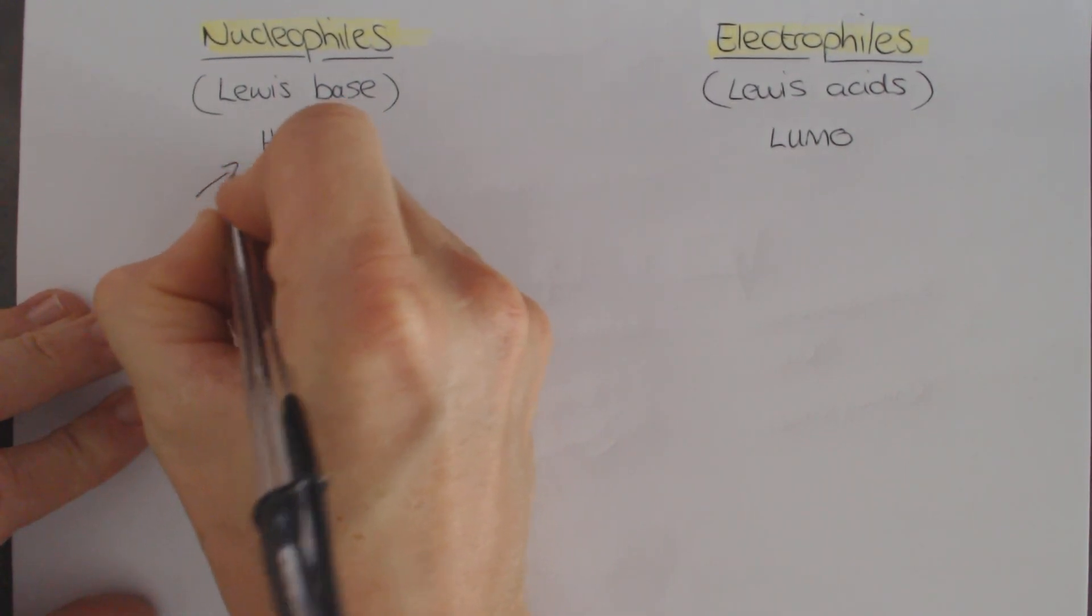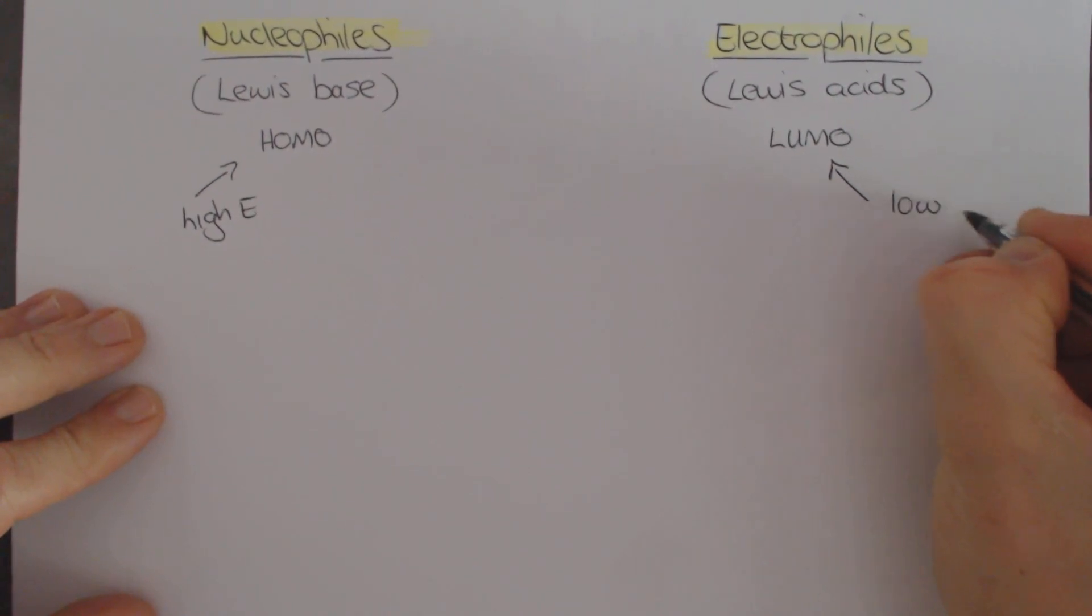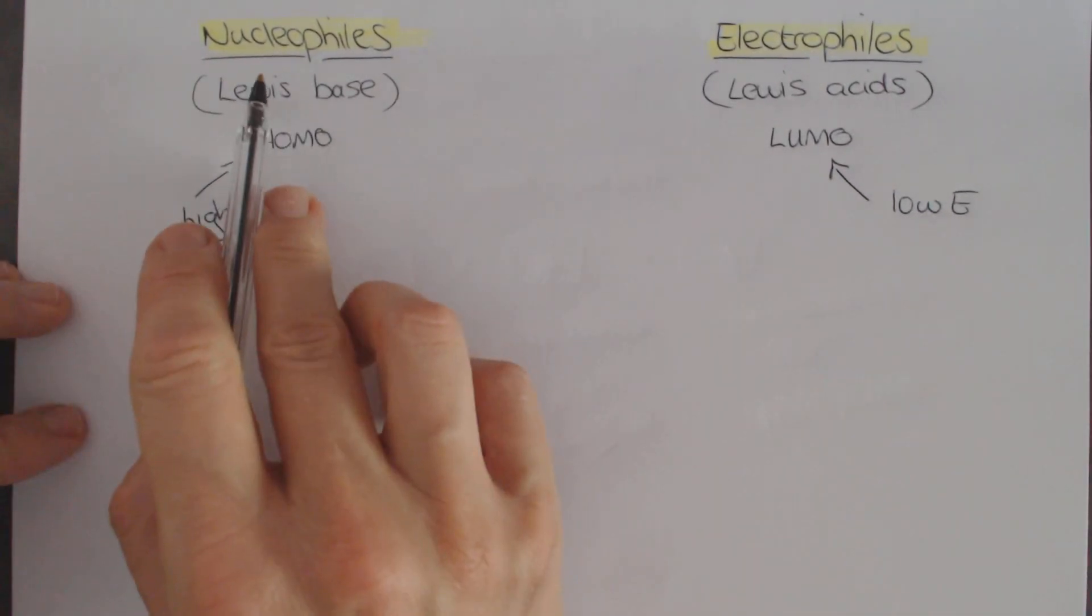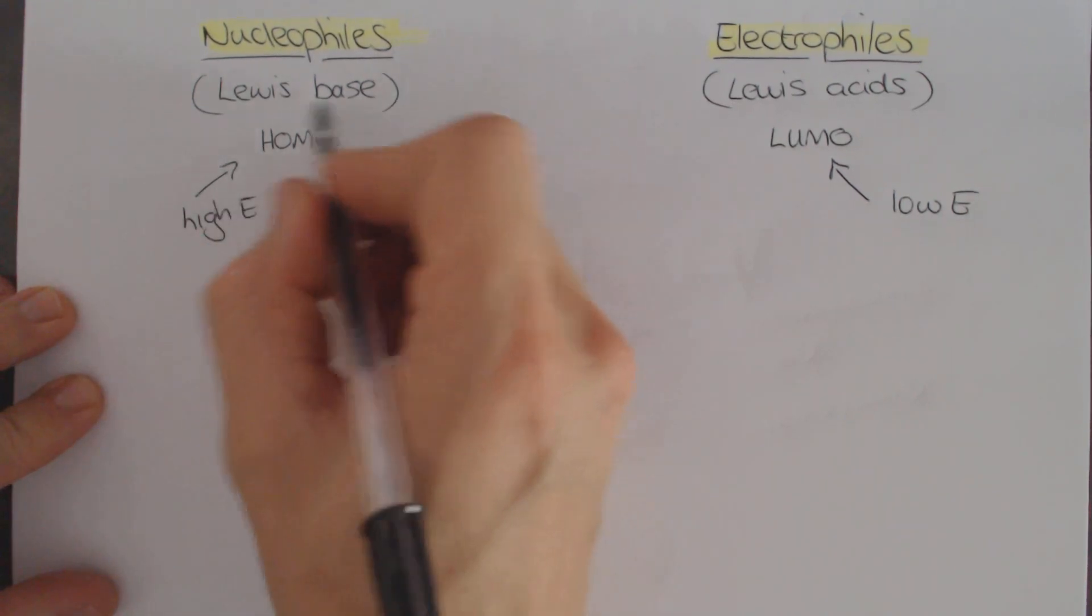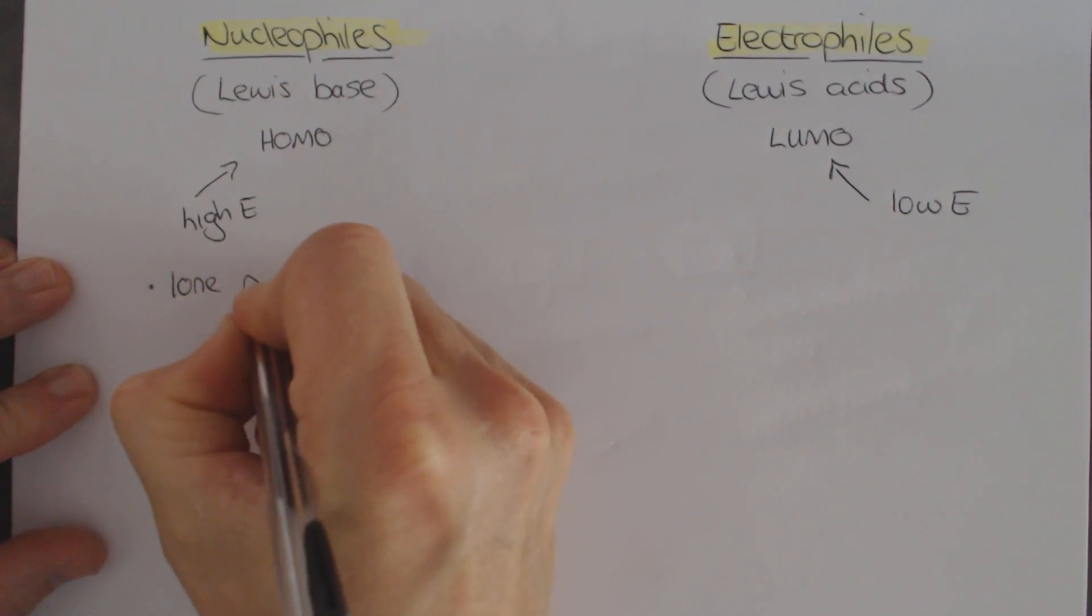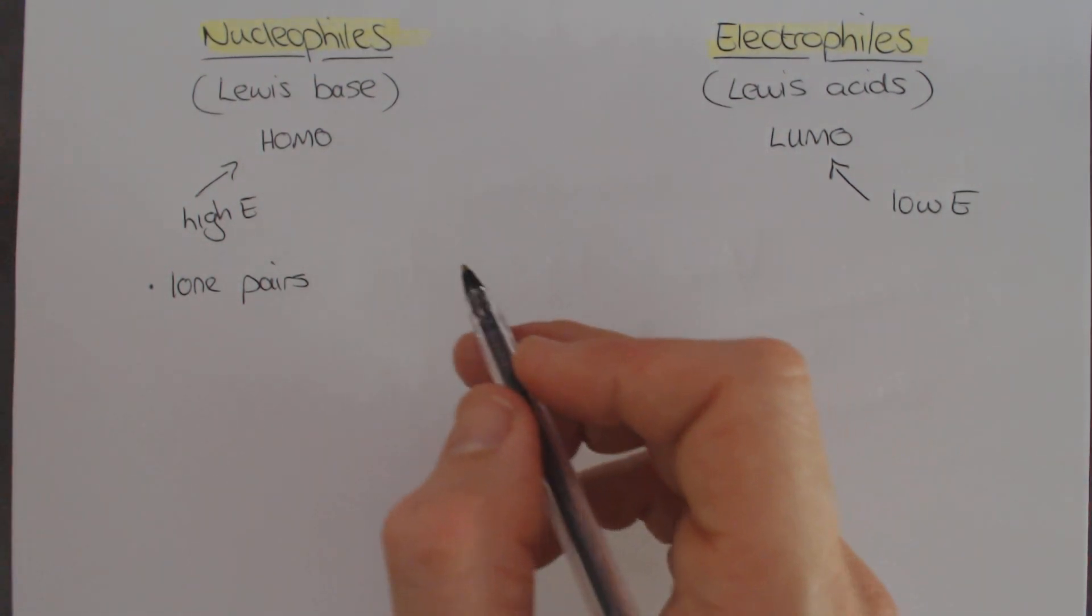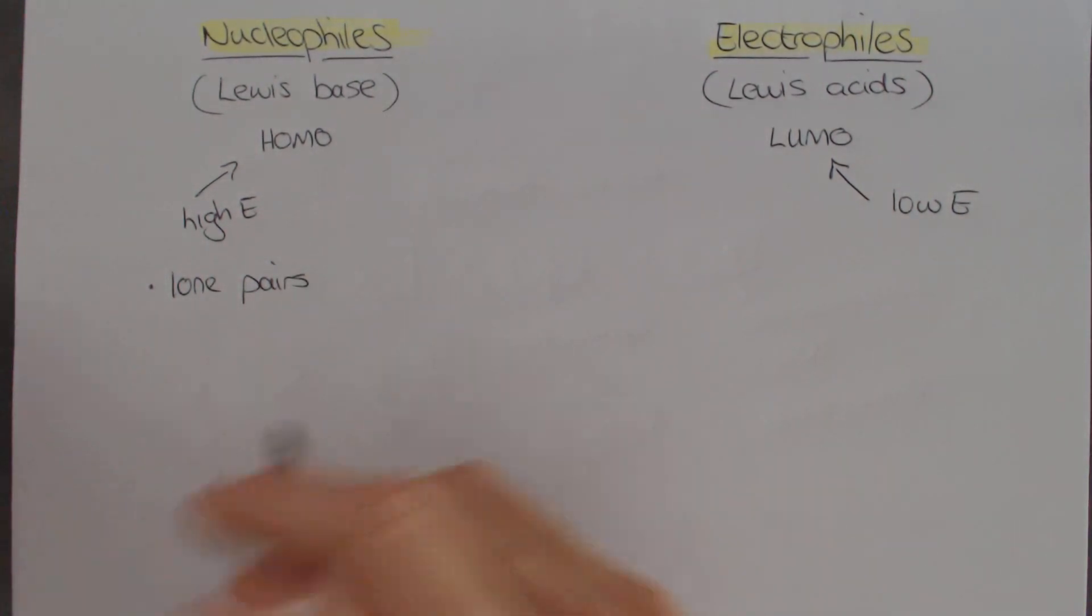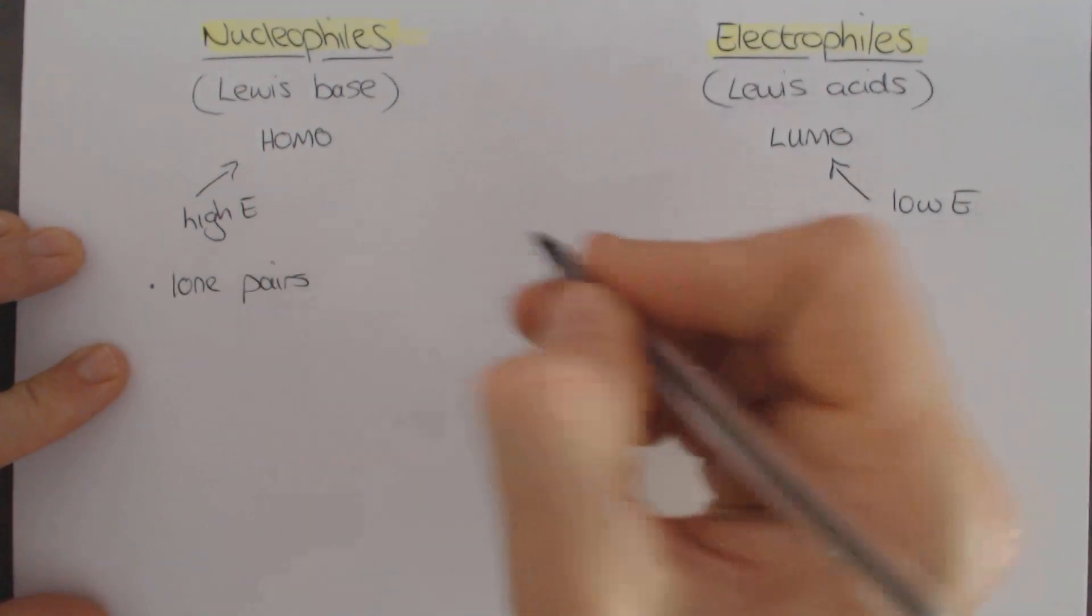Good nucleophiles have high energy HOMOs. Good electrophiles will have low energy LUMOs. What are the things that affect those two together? With high energy HOMOs, the number one thing to look at in a molecule is lone pair electrons. Lone pairs are high in energy because they don't combine. The lone pairs that are part of an atom never combine with any other molecular orbital. Because they never combine, they never dropped in energy. So they almost always are higher in energy.